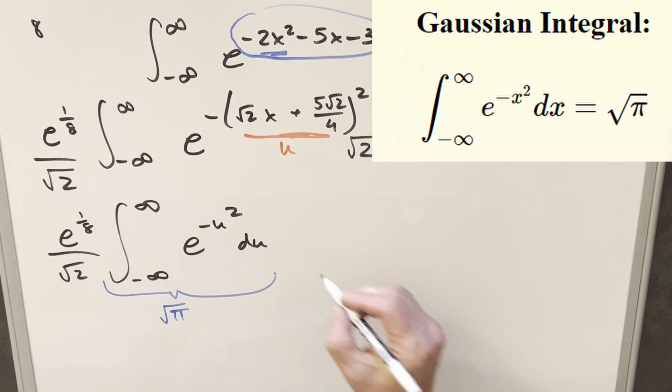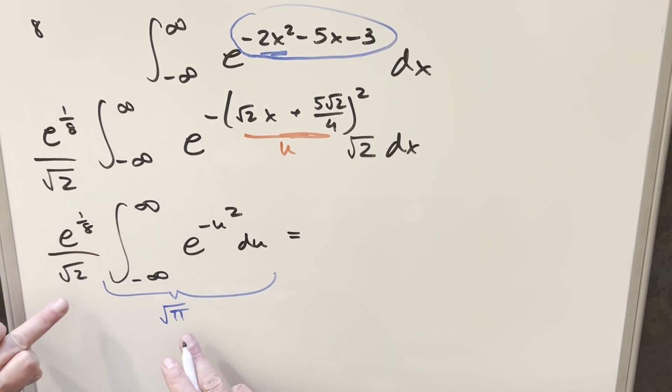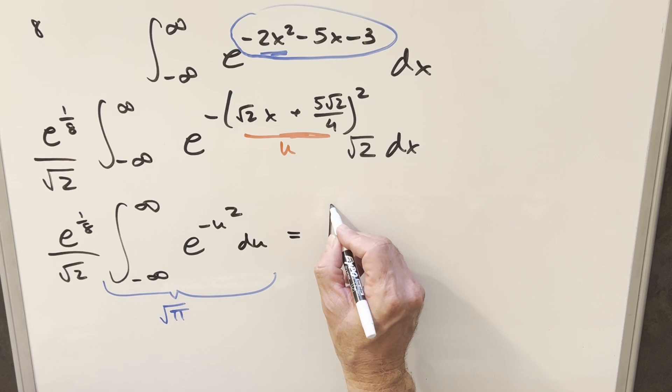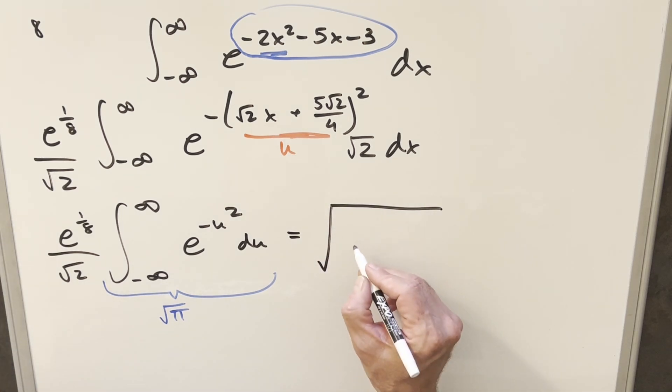And so what we can do is put this all together, but I think what I'm going to do is, let's try to bring it all under one square root. You could leave the e to the 1 8th out, but I'm just going to bring it in because I feel like it.